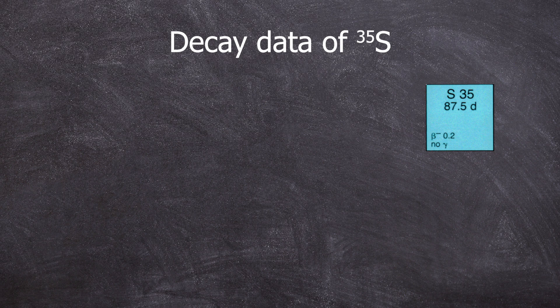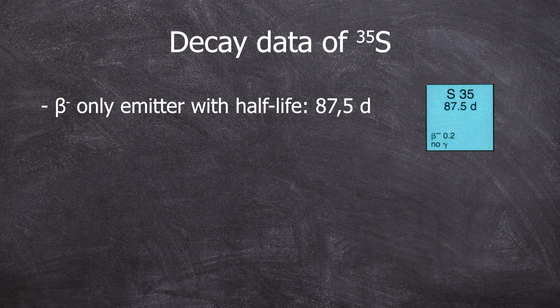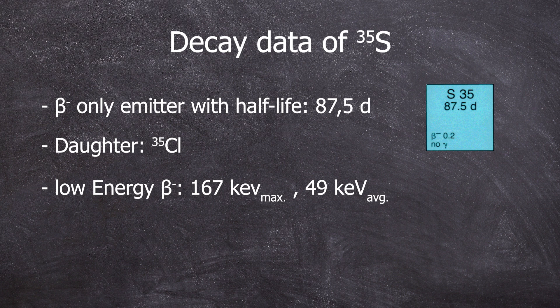Here are the decay data on this radionuclide. It's a beta-only emitter with a half-life of 87.5 days. It decays into stable chlorine-35. Beta particles have a low energy with a maximum of 167 keV and an average of just 49 keV.